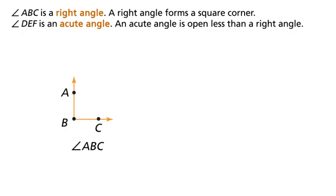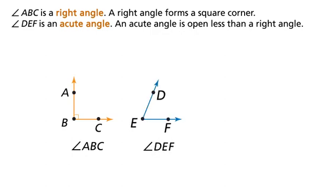Angle ABC is a right angle. A right angle forms a square corner. Angle DEF is an acute angle. An acute angle is open less than a right angle.